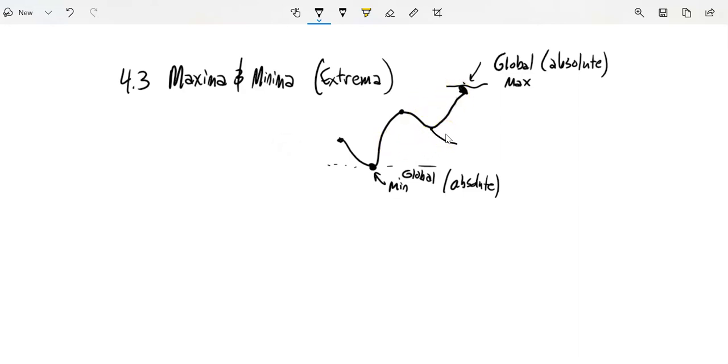But there's some other values on here as well. Like if I look at this value right here, this is a minimum, but it's a minimum in its neighborhood. If I just think about locally, I don't look at the whole graph, but I just look at around where that point is at. This is a local minimum.